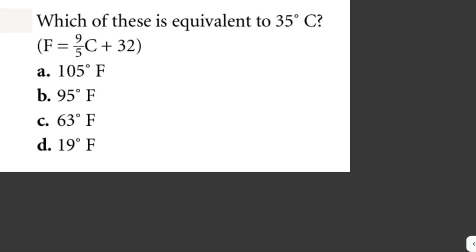Which of these is equivalent to 35 degrees Celsius, given that degrees Fahrenheit is equal to nine over five times degrees Celsius plus 32? So since we're given the value in degrees Celsius and also the formula, we just have to plug in directly the value to the formula. So that is degrees Fahrenheit equals nine over five times 35 plus 32.